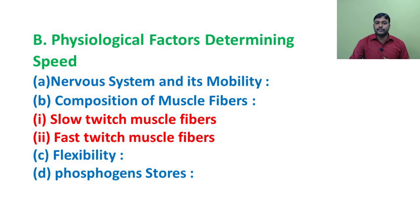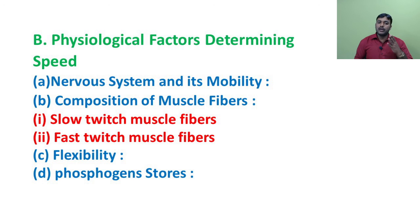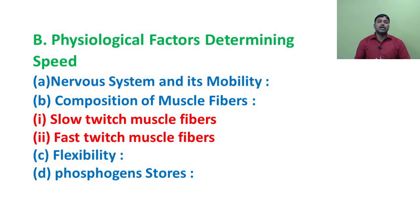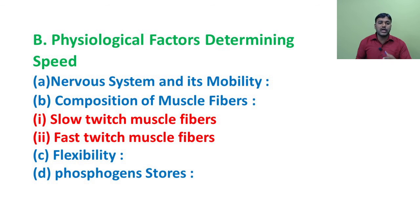Flexibility is referred to as range of movement around the joints. Every individual has a different level of flexibility. Better flexibility around joints gives more range of movement to the muscle, which can be helpful in generating better speed. Regarding phosphogen stores: to exhibit speed performance, muscles need a high amount of energy. The amount of phosphogen stores in the muscle determines speed movements.